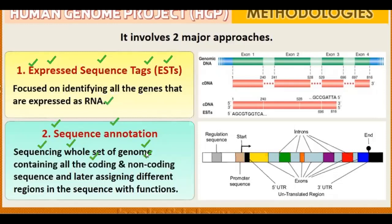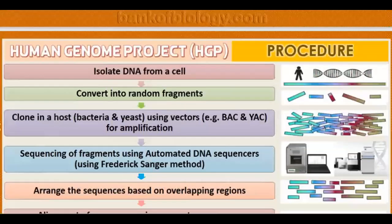The haploid set took all the sequence of genes — coding regions, where RNAs make proteins, and non-coding regions. The non-coding regions also have a lot of importance for human expression, nature, and behavior. Then they assigned different regions in the sequence with functions — after sequencing, they told the functions that this sequence has this function, this is a gene.